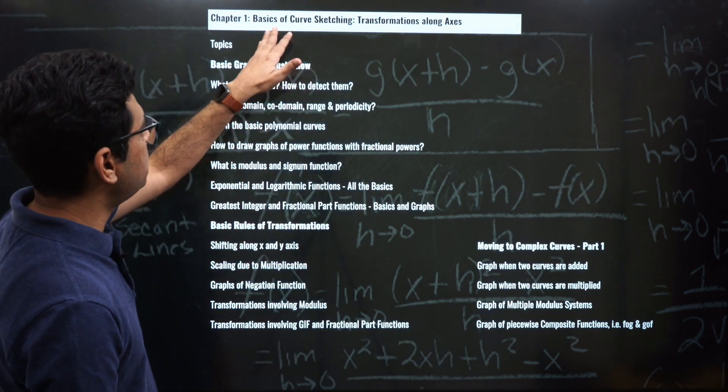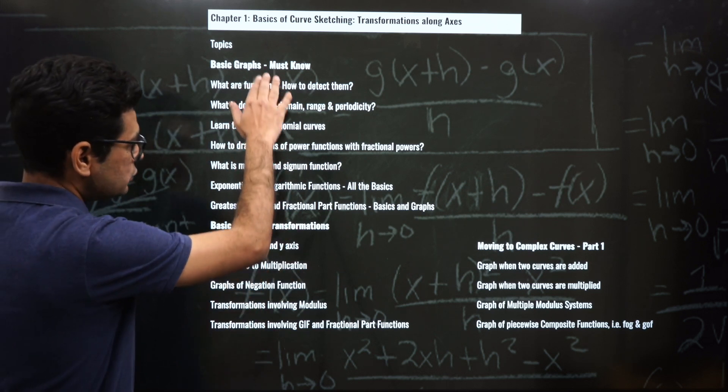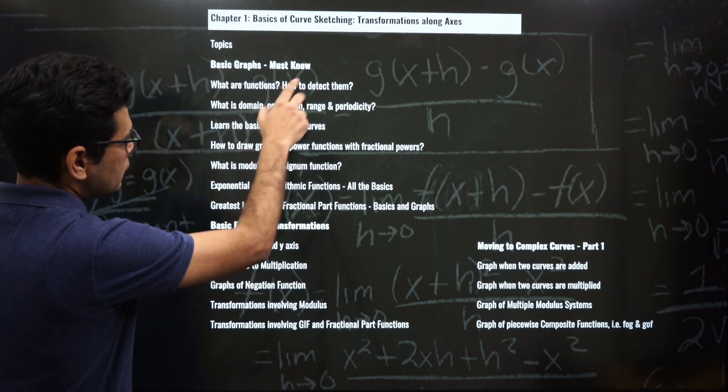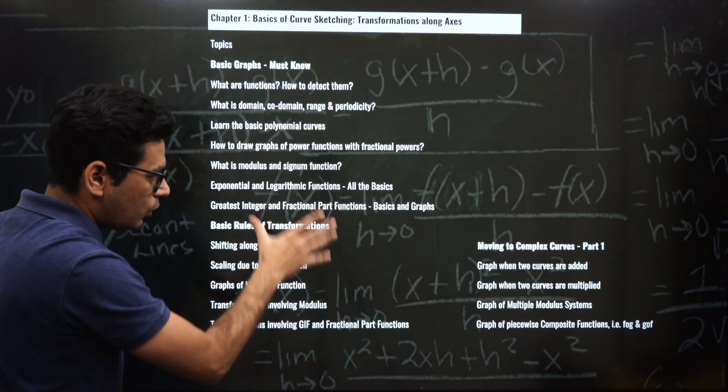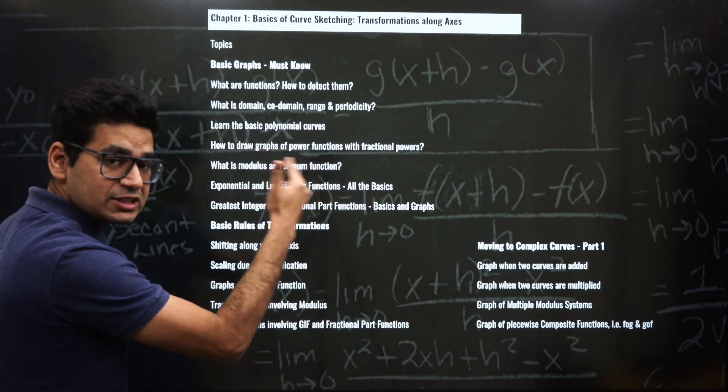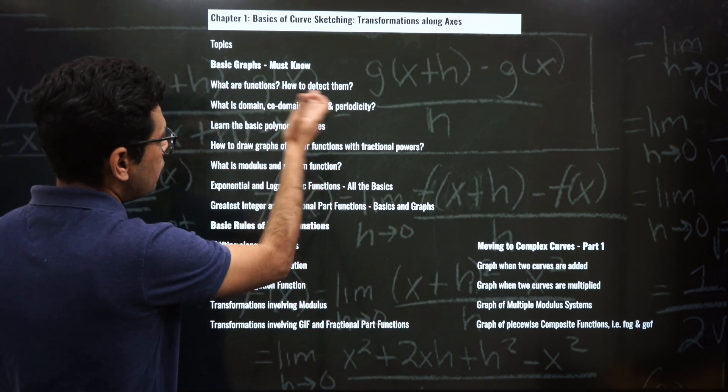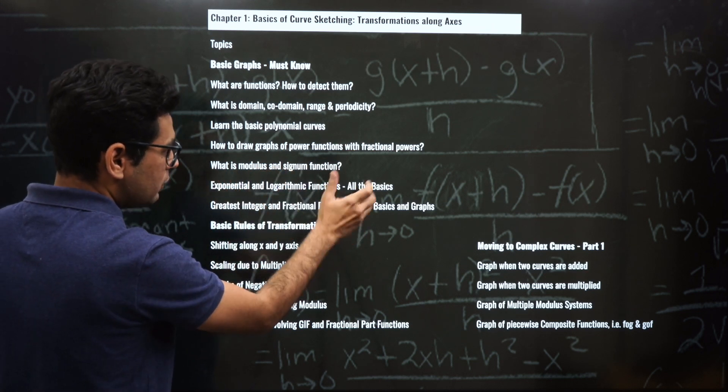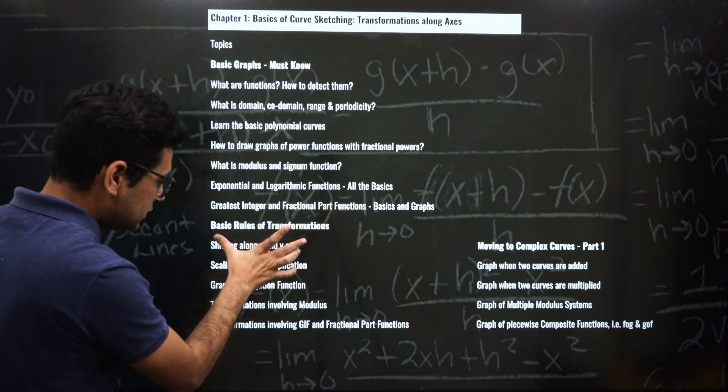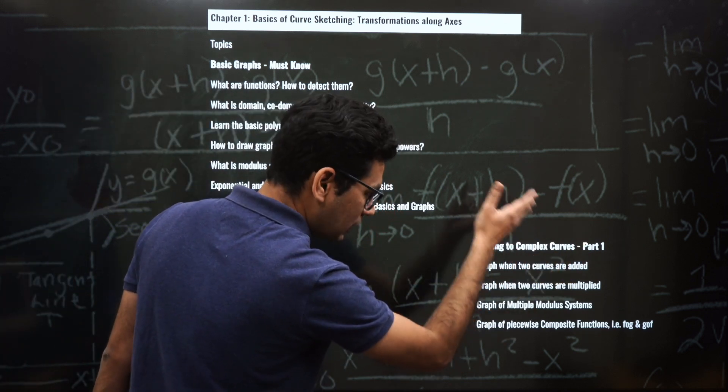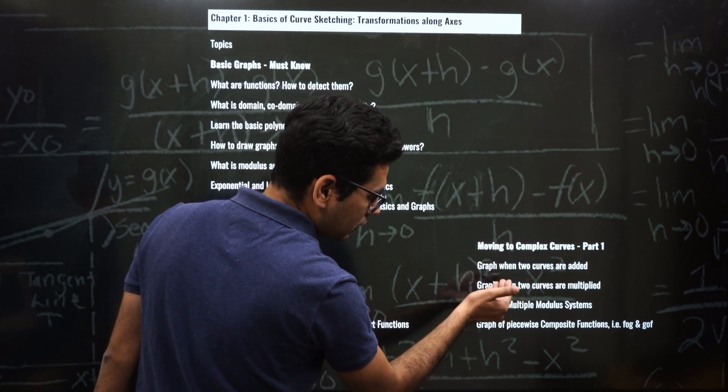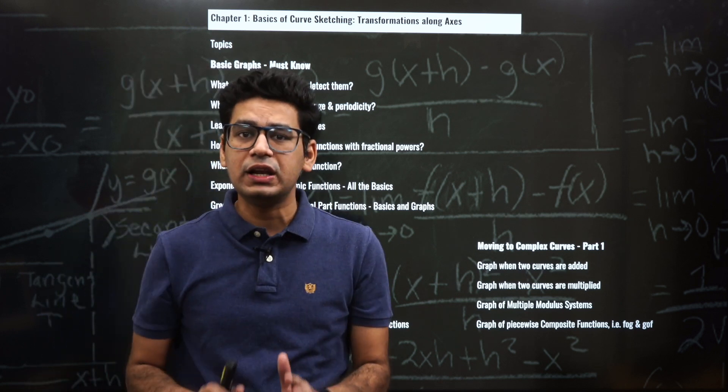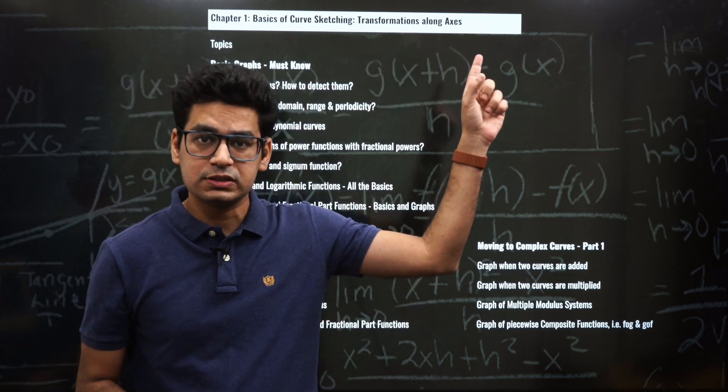I'm giving you a sample - this is the first chapter: Basics of Curve Sketching and Transformation along X-axis. You may not be able to read it correctly - you'll have to improve the resolution on YouTube. We'll start with graphs. You'll get and be taught on all these particular topics - you'll get recorded lectures and live lessons will be held for questions related to these topics. For example: what are functions, how to detect domain basics, how to draw graphs of power functions with fractional powers, modulus and signum function, exponential and logarithm functions - all their basics and graphs, greatest integer, partial fractions, basic rules of transformations. Then we'll study complex curves, which is segregated into four parts: graphs when two curves are added, when multiplied, graph of multiple modular system functions, graph of composite functions. You can imagine how much detail has gone through while planning just transformation along the x-axis.